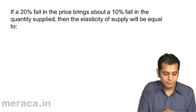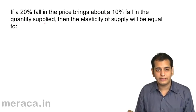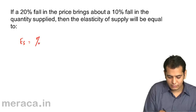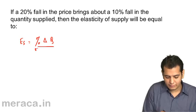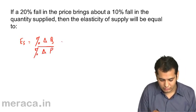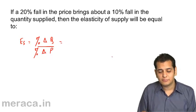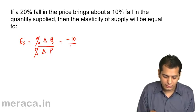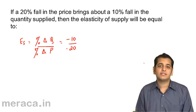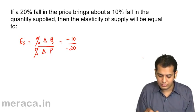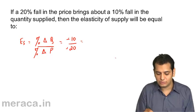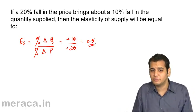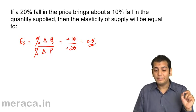One more question: If a 20% fall in price brings about a 10% fall in the quantity supplied, then the elasticity of supply will be equal to — we know that elasticity of supply is percentage change in quantity supplied divided by percentage change in price. The percentage change in quantity supplied is minus 10, because it is falling by 10%, and the percentage change in price is minus 20. The minus and minus get cancelled, and the answer is 1/2 or 0.5. So the elasticity of supply in this case is 0.5.